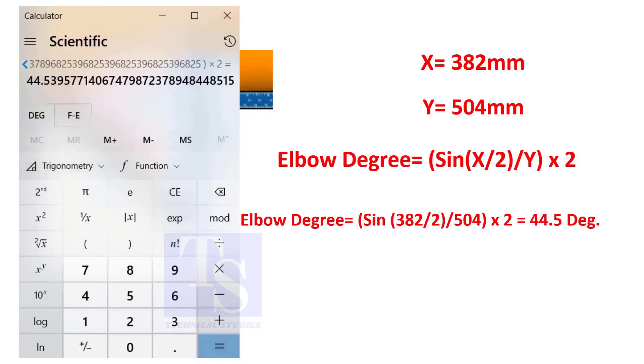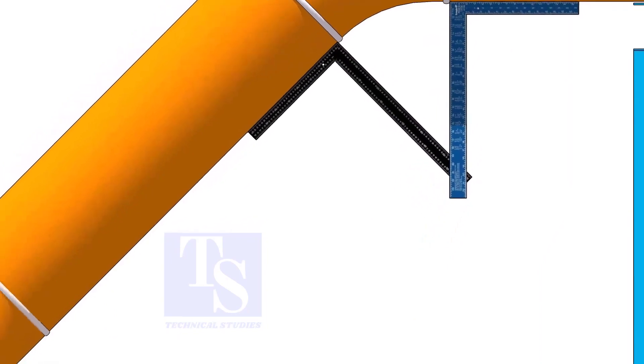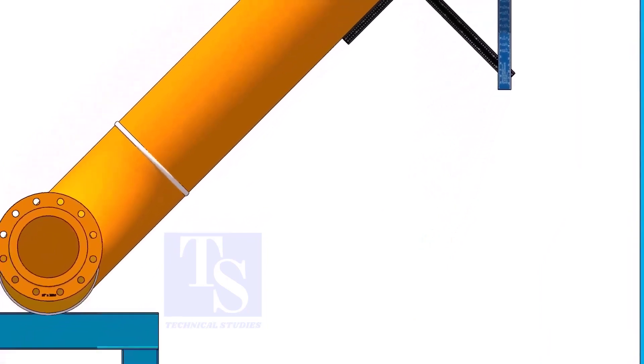So, the degree of the elbow is 44.5. Let us check the degree of one more elbow.